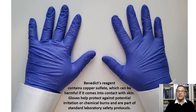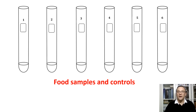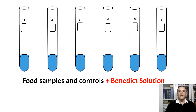Let me go over the procedure we will carry out today. First, we will obtain food samples, placing 2 milliliters in each test tube. We will do the same for our controls, using 2 milliliters each. Next, we will add Benedict's reagent, a blue solution, to each sample. Then we will place all the tubes in boiling water or a water bath for about 5 minutes. Don't forget to wear gloves and goggles to protect yourself from burns, and be careful when handling boiling water.